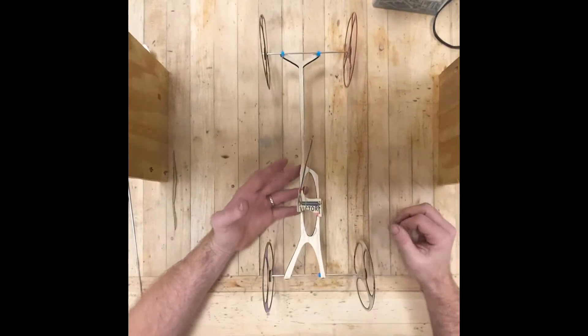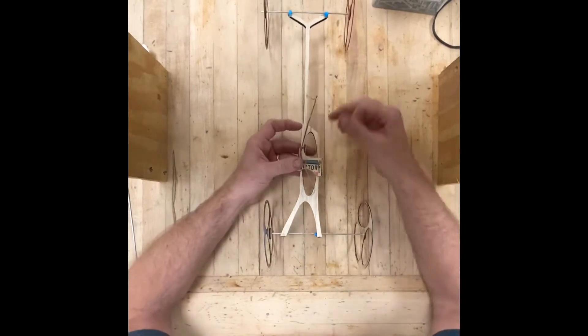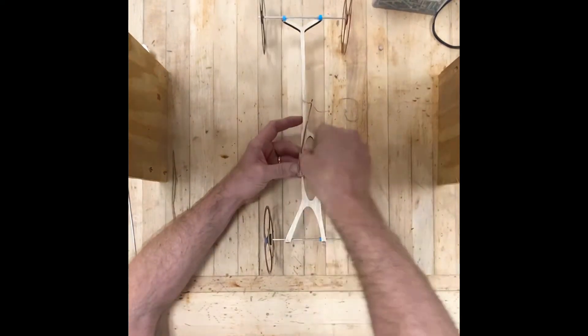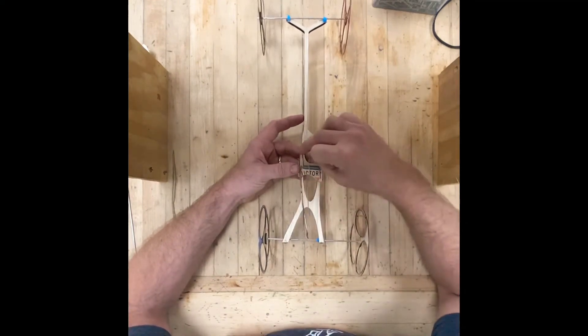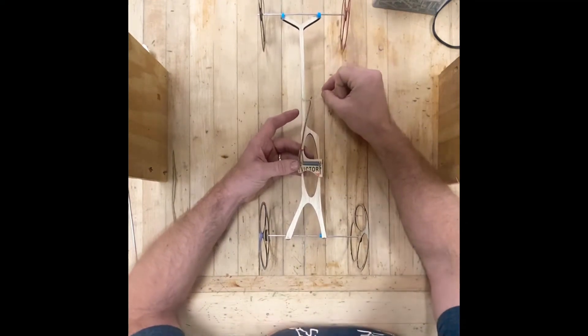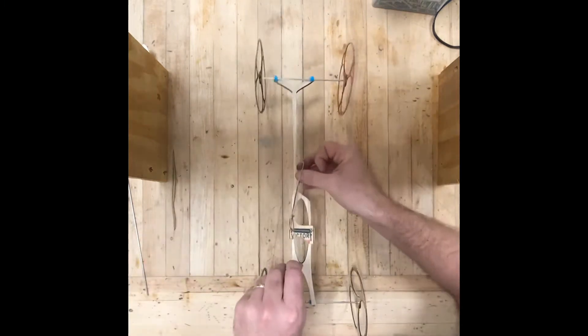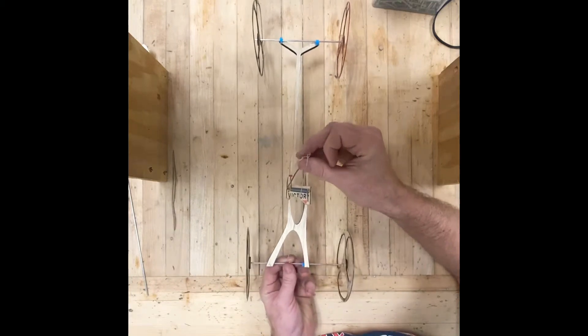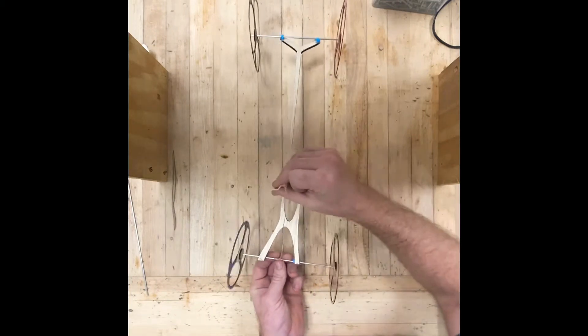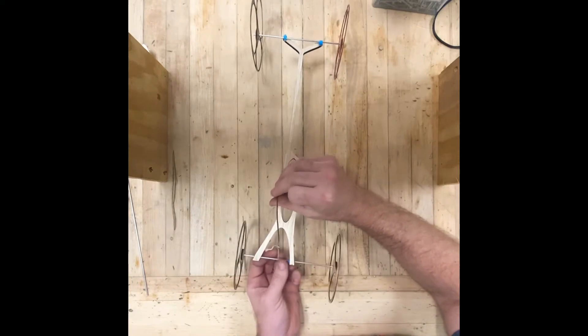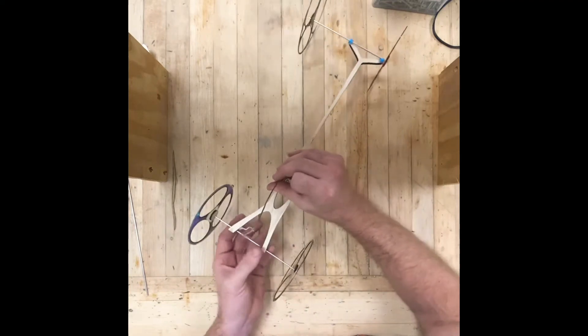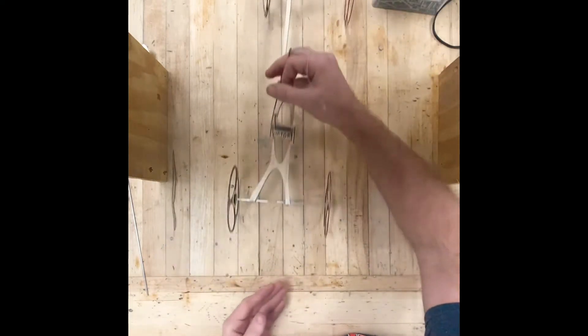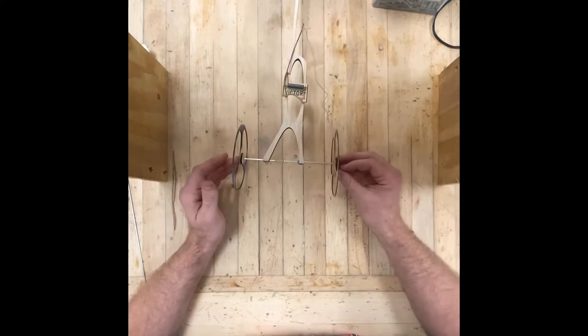So first things first, let's get into how does a mousetrap car go forward. We've got our spring here. The spring is engaged by clipping onto our lever arm, our moment arm, and then this string here is going to wrap around the axle. As it's wrapped, then we're going to load it up, then the spring pulls it forward making your wheels unwind, making the car roll forward. That's about it in the most simple form.